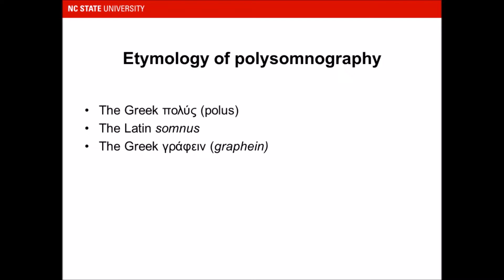Etymologically, polysomnography has three roots. First, 'polus' means many, 'somnus' means sleep, and 'graphene' means to write. So basically we are writing many signals while we are asleep. In polysomnography we record many signals and then try to study them collectively in order to understand sleep and the processes which occur while we are asleep.